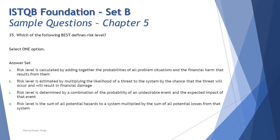Also, financial harm is only one of the impacts that can occur due to a risk — I should not be limited to just that. There are different ways a risk can impact, and I should consider all those impacts. Moreover, the word 'adding together' is key — we do not add them together to determine the level of risk, so Option A is incorrect.